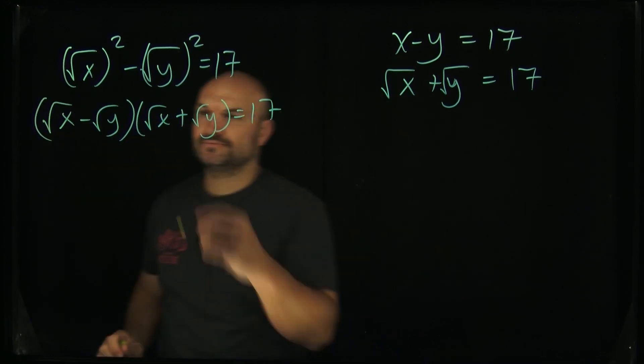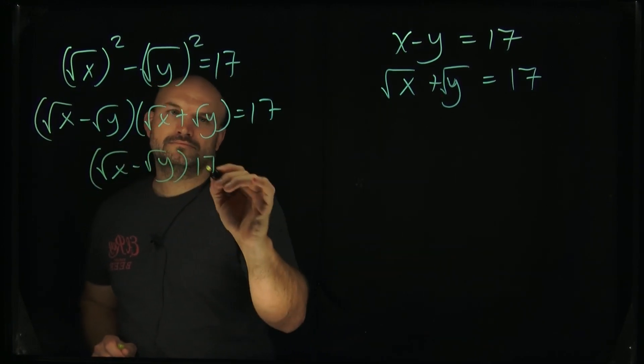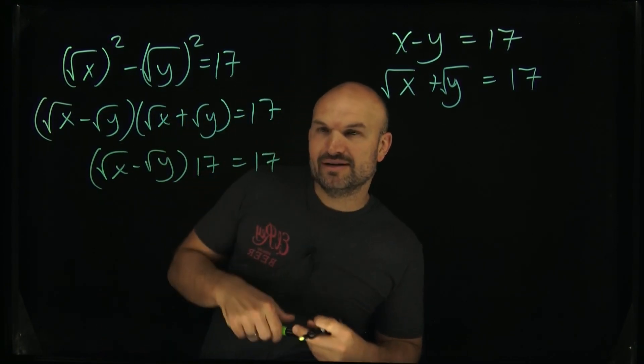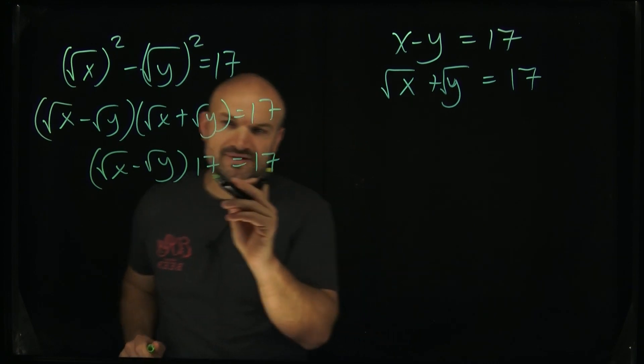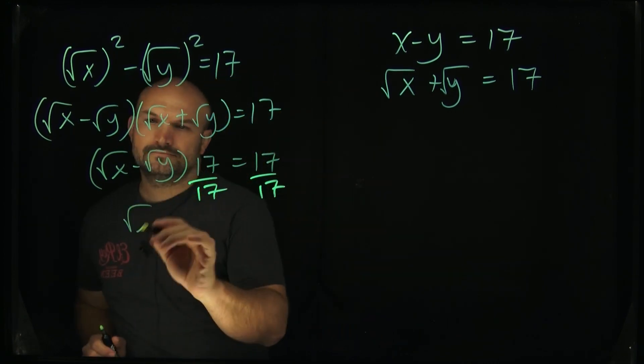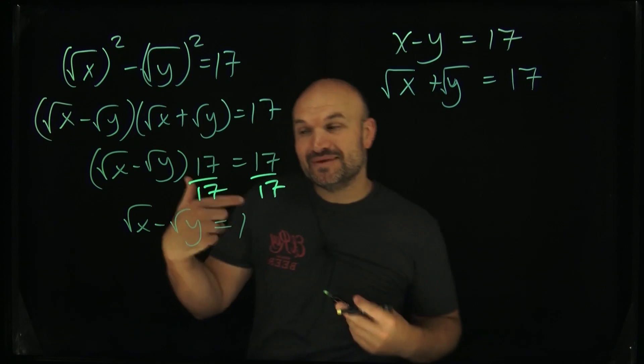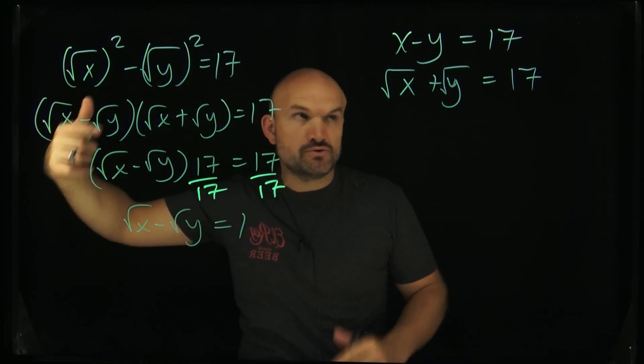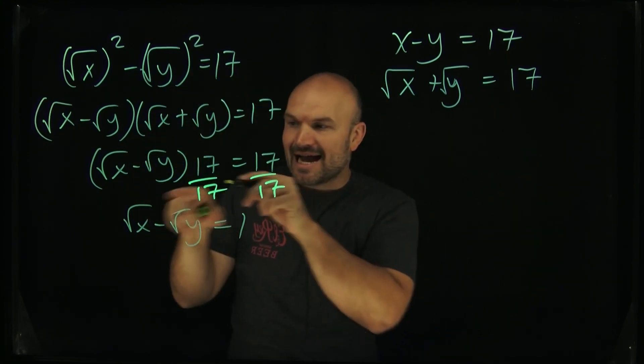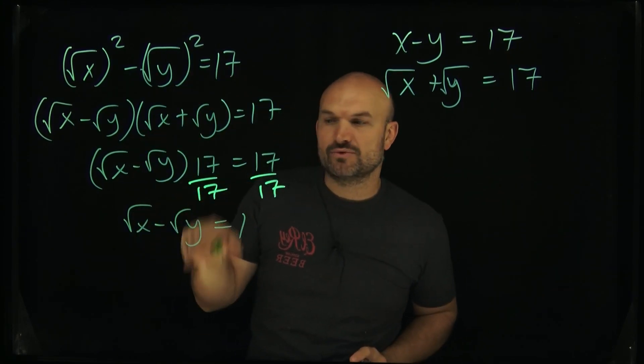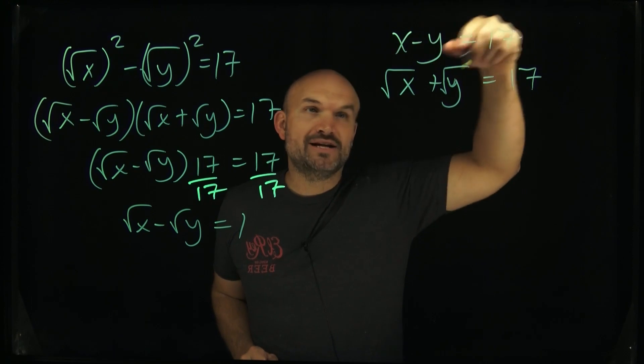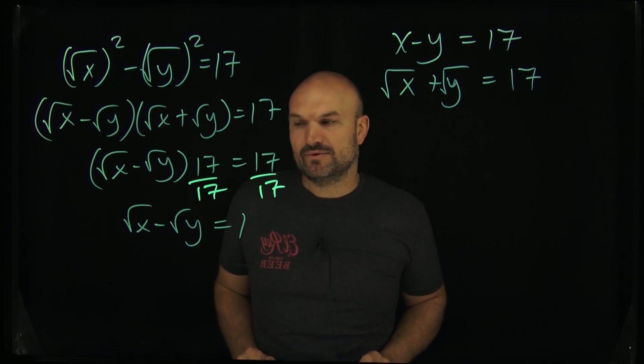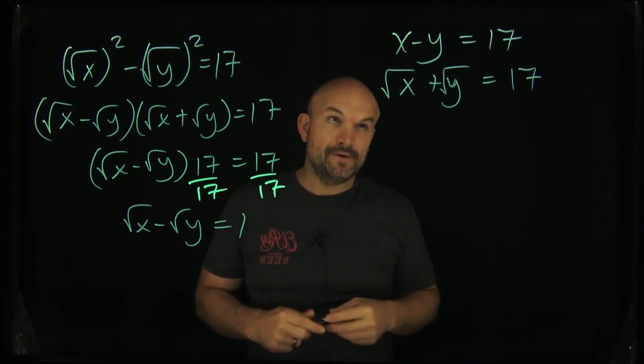So now I can rewrite this equation as (√x - √y) times 17 equals 17. The cool thing here is if I want to get rid of multiplying by 17, I just divide by 17 on both sides. By manipulating this equation using the difference of two squares and applying substitution, I now have an equation: √x - √y equals 1.